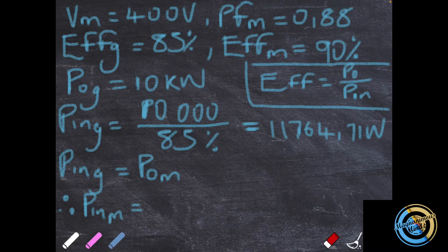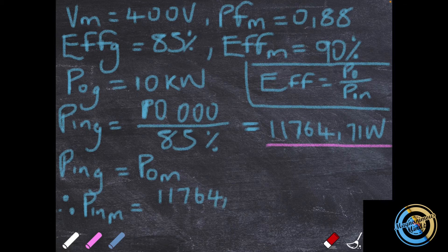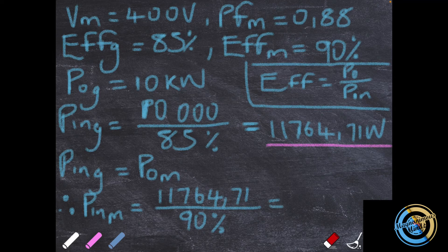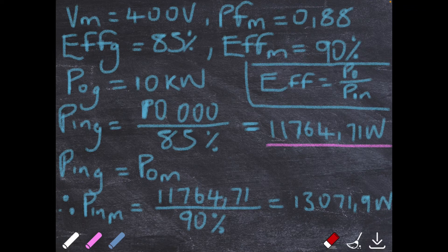Now we calculate the input power of the motor: P_in(motor) = P_out(motor) / efficiency of motor = 11,764.71 / 0.90, which equals 13,071.9 watts. This is the input power of the motor.